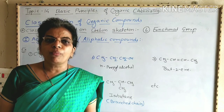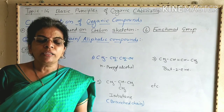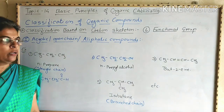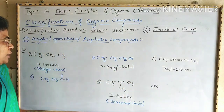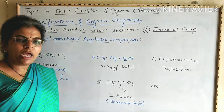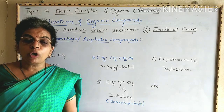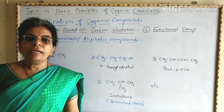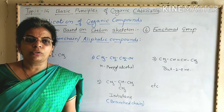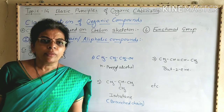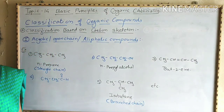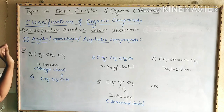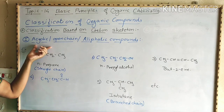After that, we started classification of organic compounds. There are various types of organic compounds and therefore they can be classified in various ways, like classification based on carbon skeleton or classification based on the functional group. Now first we are going to see classification based on carbon skeleton. According to this classification, organic compounds are classified into acyclic or open chain or aliphatic compounds, and ring compounds or closed chain or cyclic compounds.